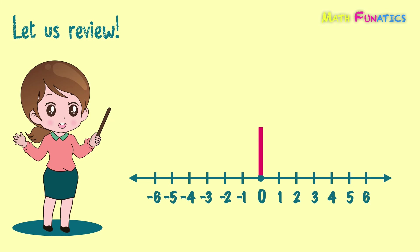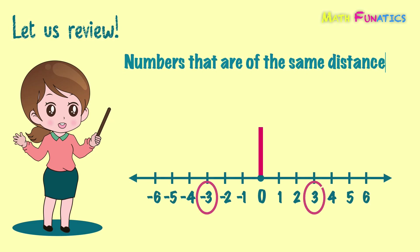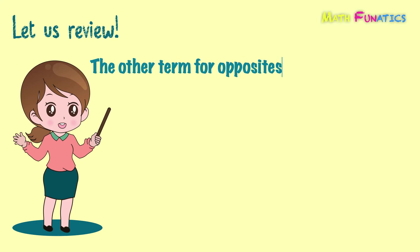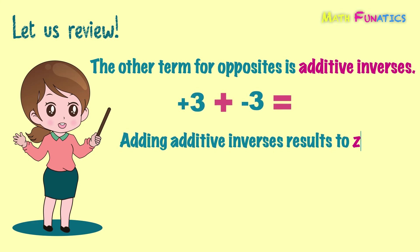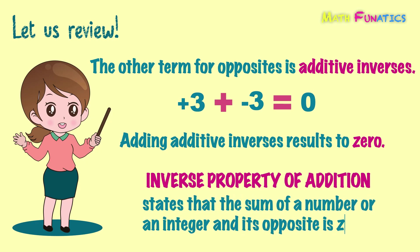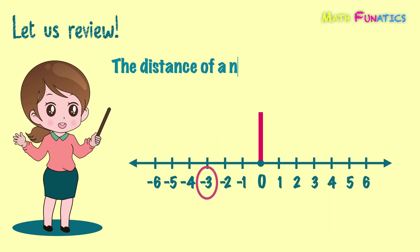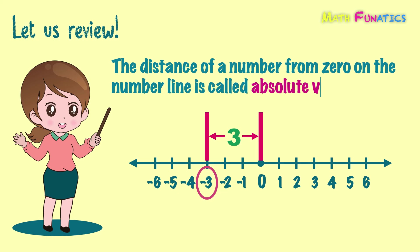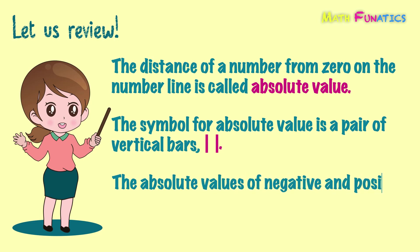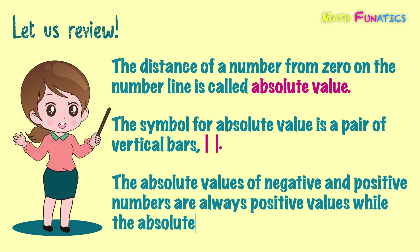Let's make a recap of what you've learned today. Numbers that are of the same distance from 0 or the origin but on opposite sides of 0 are called opposites. The other term for opposites is additive inverses. Adding additive inverses results to 0. This shows the inverse property of addition, which states that the sum of a number or an integer and its opposite is 0. The distance of a number from 0 on the number line is called absolute value. The symbol for absolute value is a pair of vertical bars. The absolute values of negative and positive numbers are always positive values, while the absolute value of 0 is 0.